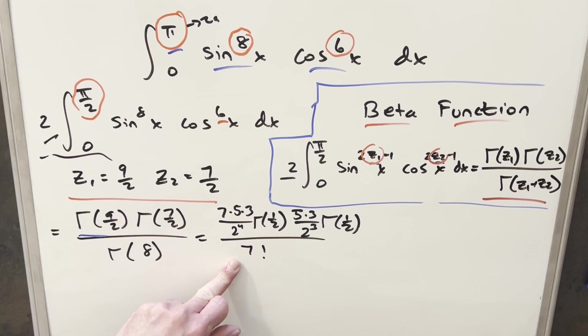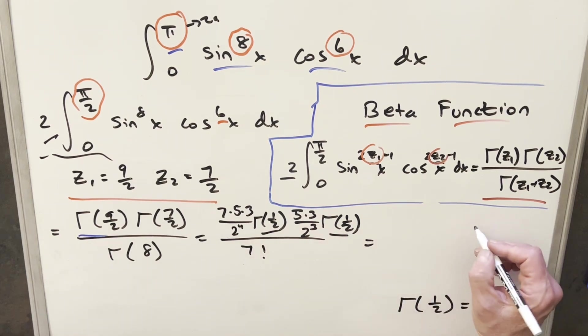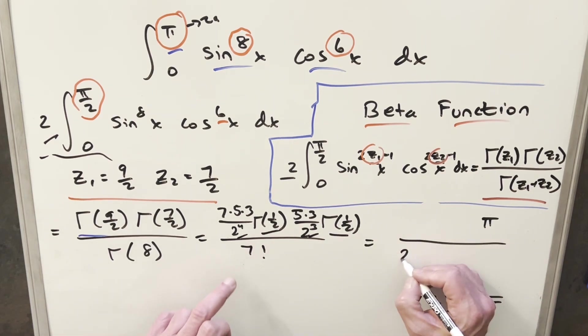Now in order to finish it off, I just want to get some simplification here. One thing for gamma of 1 halves, we typically just remember a value. Gamma of 1 halves is a known value. This is actually just the same thing as square root of pi. So putting this together, we multiply them together, and I'll write this as a pi on the end. For 2 to the 4th times 2 to the 3rd, I'll put those together as 2 to the 7th.